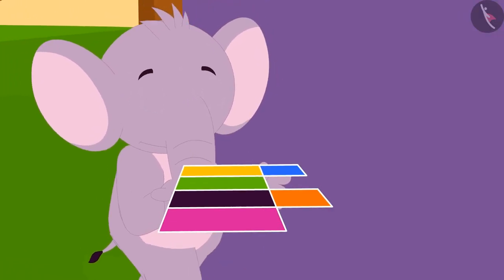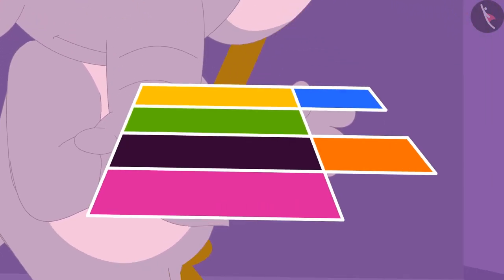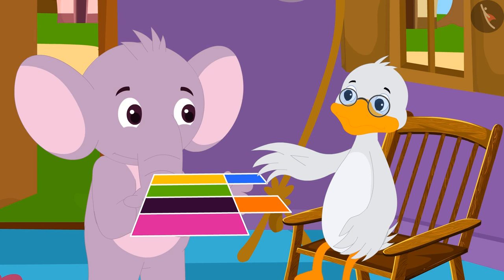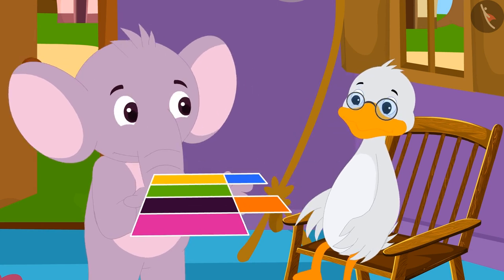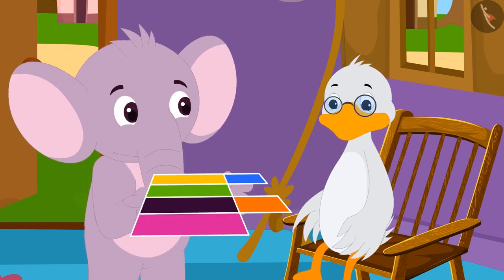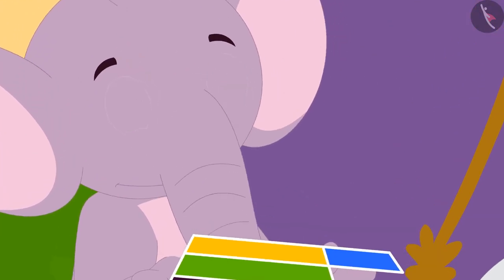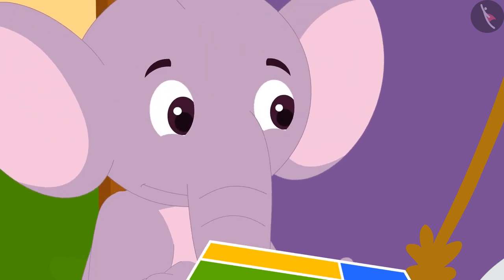Appu suddenly came to Babel uncle's house today. A cardboard cutout is also seen in his hand. When the uncle asked him the reason for his sudden visit, Appu told him that he bought cutouts of some cuboid shaped boxes. But now, despite his efforts, he was not able to make boxes from them.